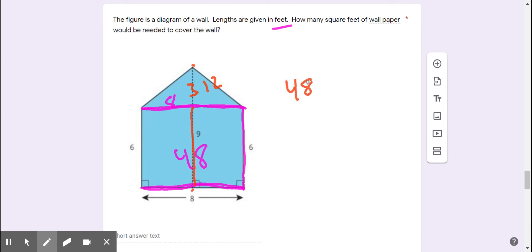48 square feet for the wall part, plus 12 square feet for the roof part. 48 plus 12 is 60. 60 square feet of wall to cover with wallpaper.